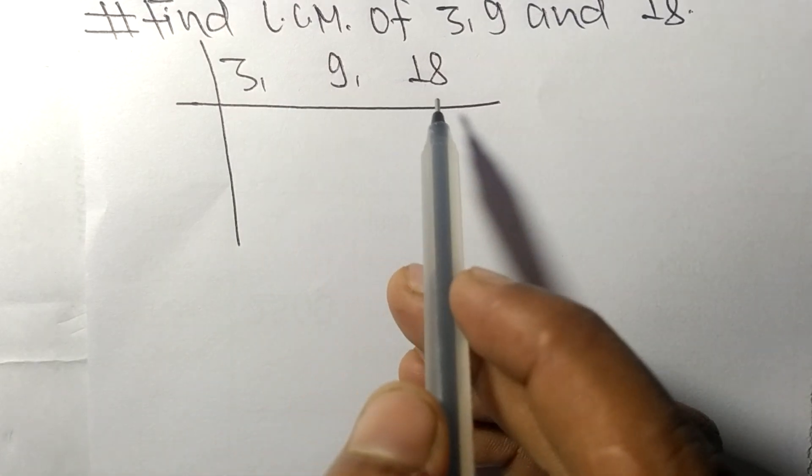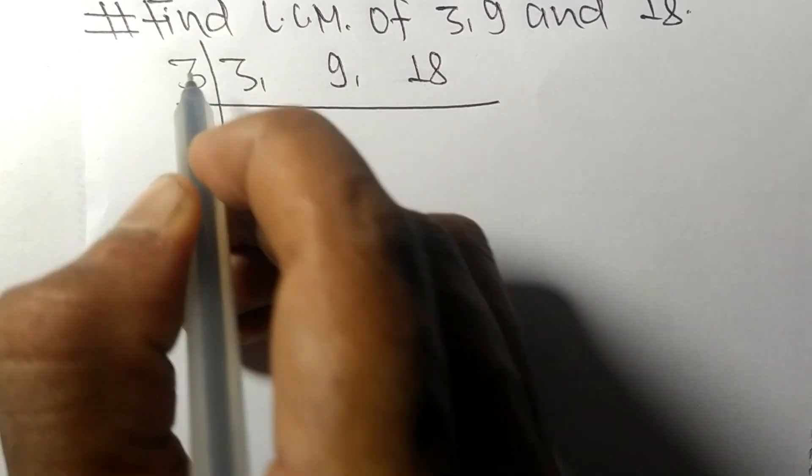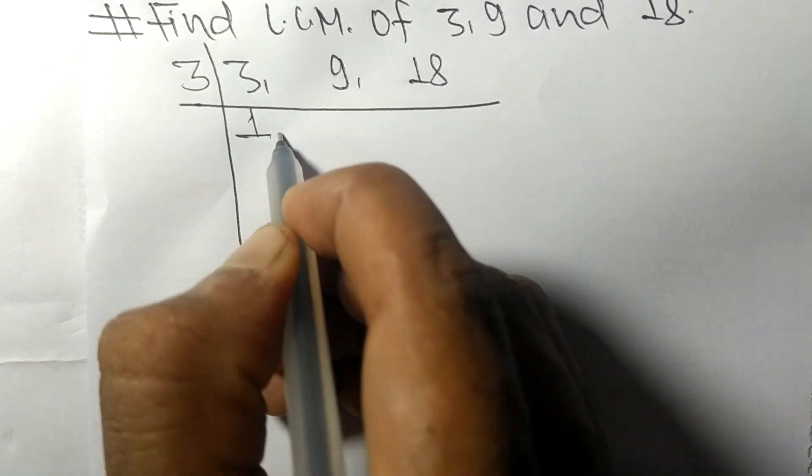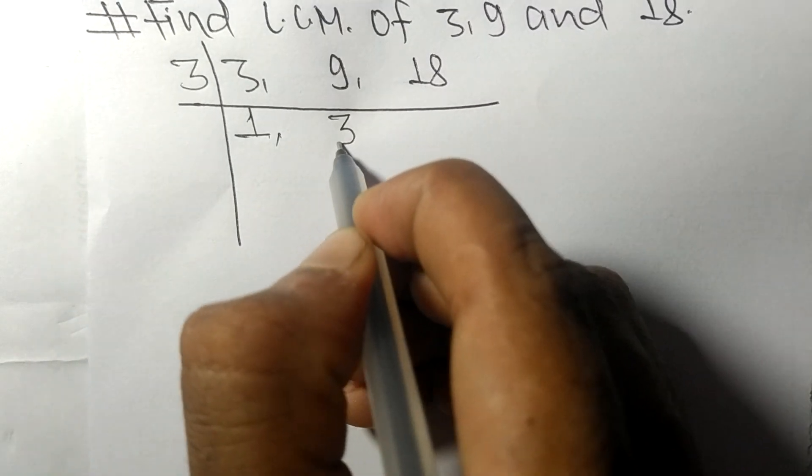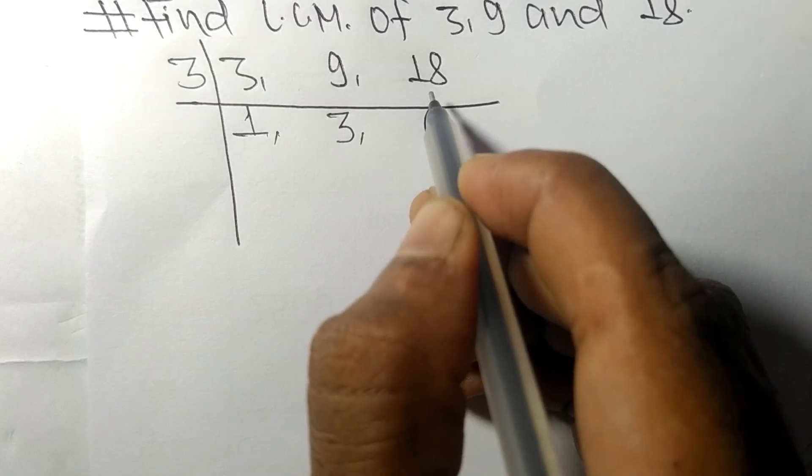These numbers are divisible by 3. 3 times 1 means 3, 3 times 3 means 9, 3 times 6 means 18.